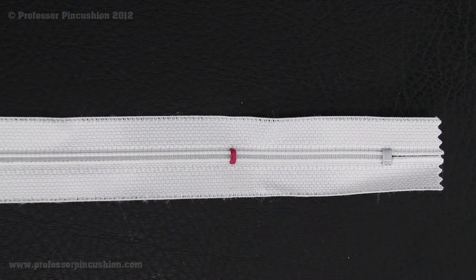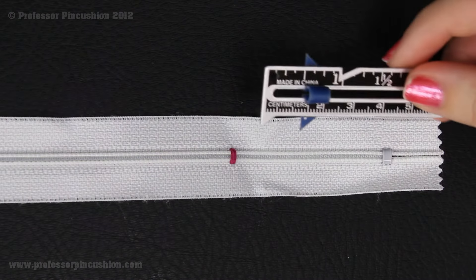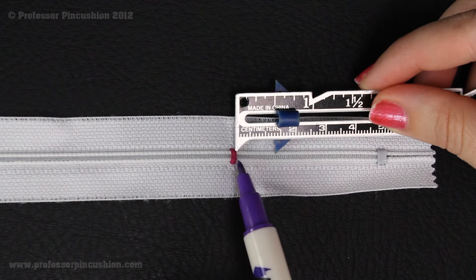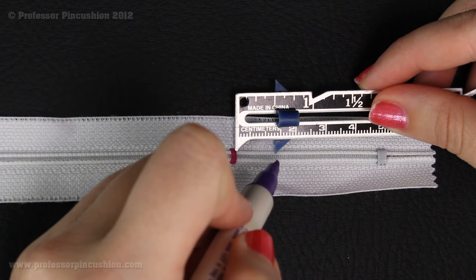After you finish doing your stitches, you're going to want to get a ruler or your sewing gauge, line it up, and a half inch past your stitches you're going to make another mark.